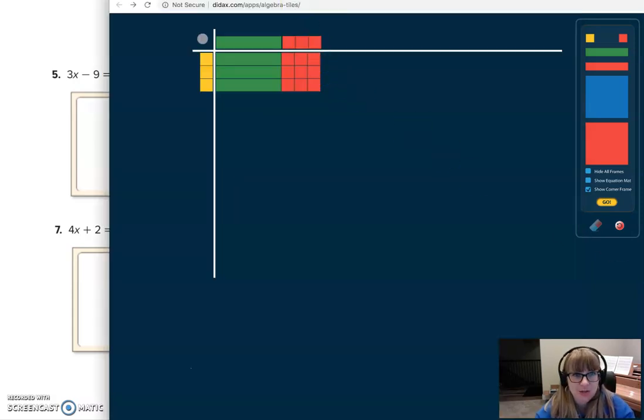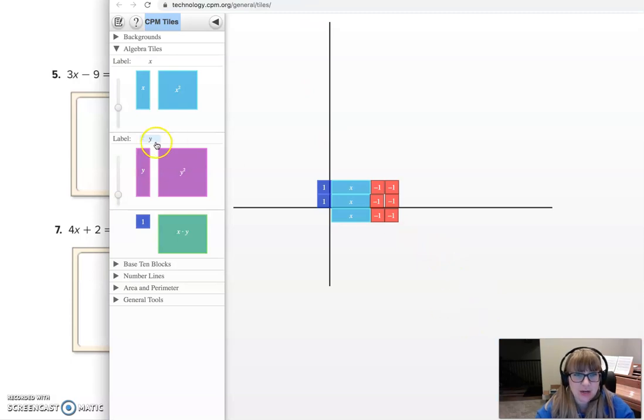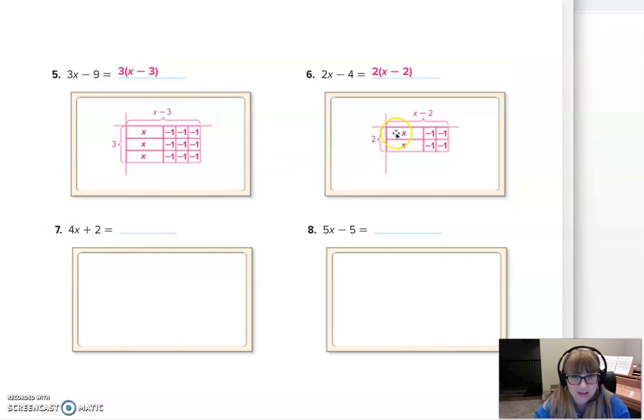Looking at the next one, I switched over to the CPM so you could see that one. Just remember if you're trying to rotate these tiles here, it's a double click to get it to rotate. And if you're trying to turn them into negatives, you just single click those. So here I've got my 2x minus 4. And how long are they? Well, that's x and negative 2 long. So x minus 2. And it's 2 tall, which gives me 2 times x minus 2. 2 by x minus 2. Multiply those together. And that's how I got the 2x minus 4.